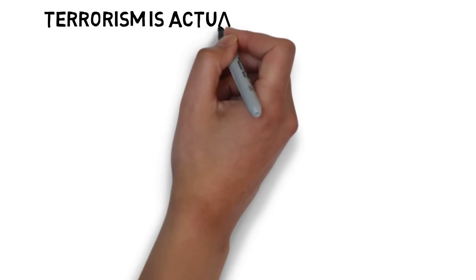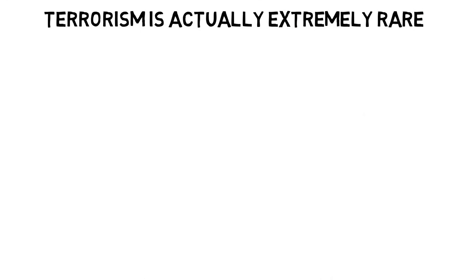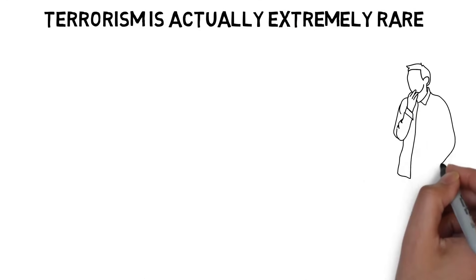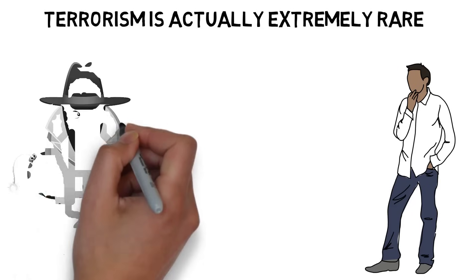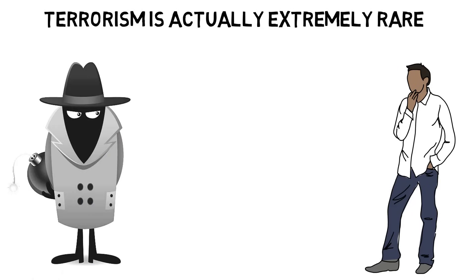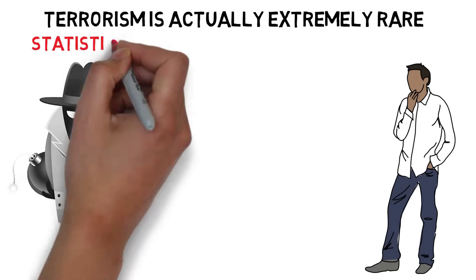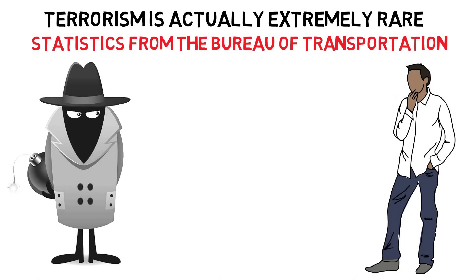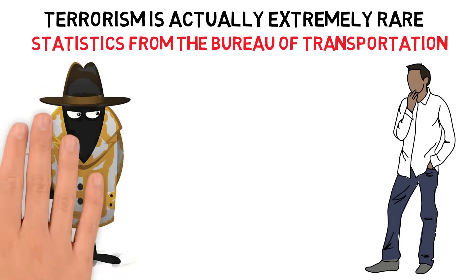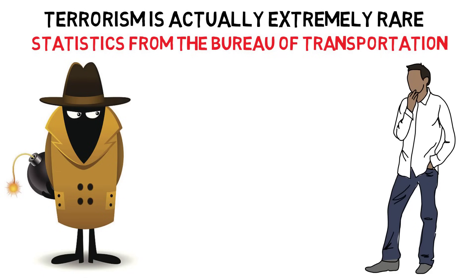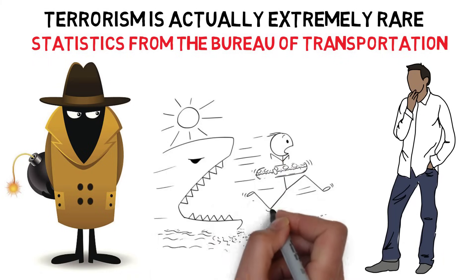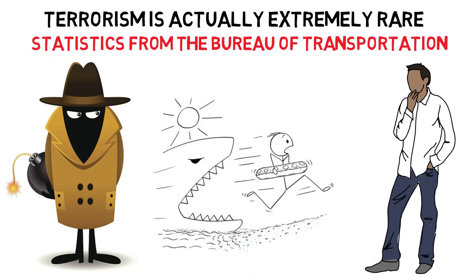2. Terrorism is actually extremely rare. And if you're thinking, yeah, but what about terrorism? That's highly unlikely as well. Statistics from the Bureau of Transportation show there's roughly one terrorist incident per 16,553,385 departures. You're more likely to be eaten by a shark.